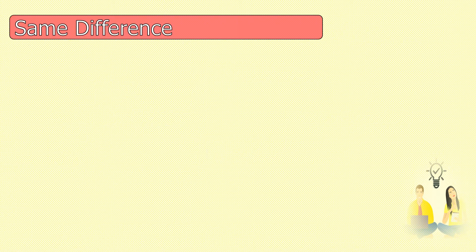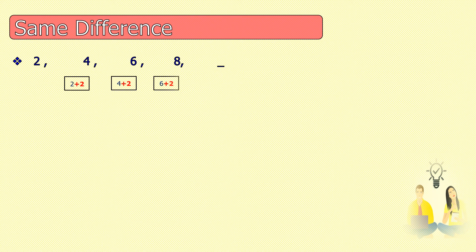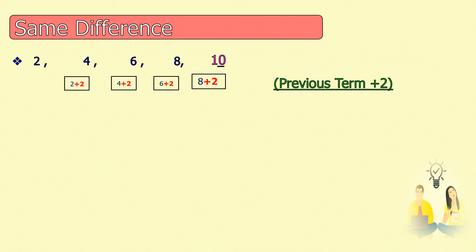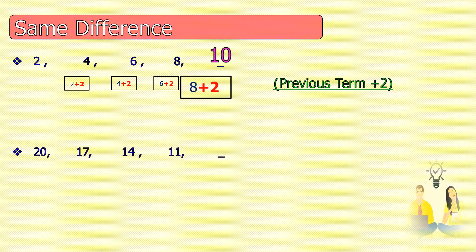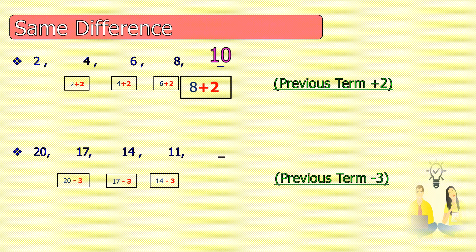In a same-difference series like 2, 4, 6, 8, the difference is 2. Two added to every previous number gives the next one: 2+2=4, 4+2=6, 6+2=8, and 8+2=10 is our answer. Similarly, in the series 20, 17, 14, 11: 20−3=17, 17−3=14, 14−3=11, and 11−3=8 is our answer.